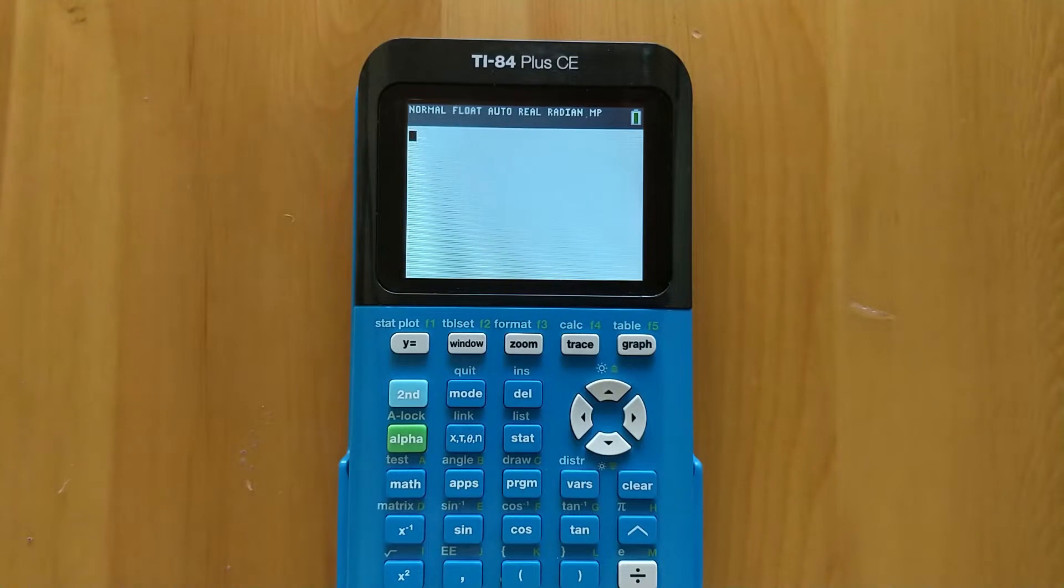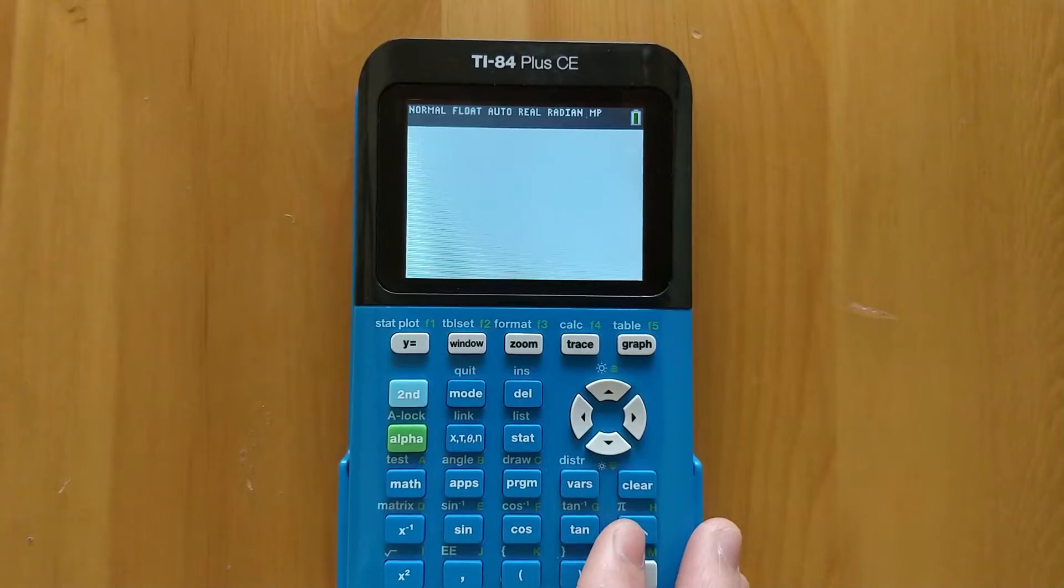Hello everyone. This is just going to be a quick tutorial on how to calculate the mean, median, mode, and other such values of a data set on the TI-84 Plus CE or any other TI-84 Plus graphing calculator.